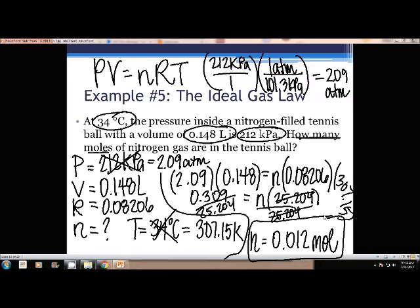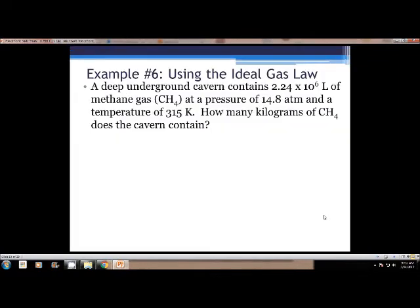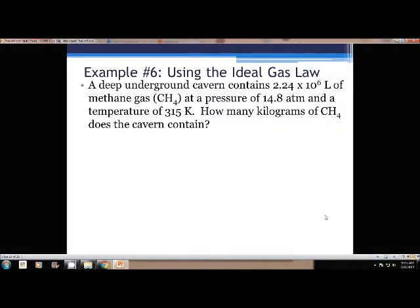So that's just if you have to plug stuff in and solve for moles, which you might have to do that on the 1 through 3 on the worksheet. But now, example 5, we're going to have to deal with grams, and so we're throwing that in the mix now. So a deep underground cavern contains 2.24 times 10 to the 6 liters of methane gas at a pressure of 14.8 atmospheres, and a temperature of 315 Kelvin. How many kilograms does the cavern contain?